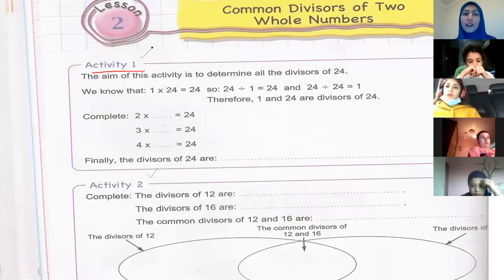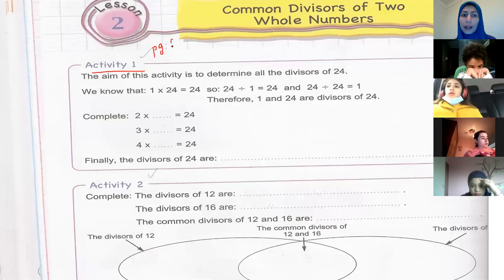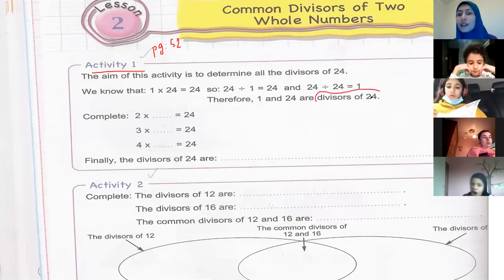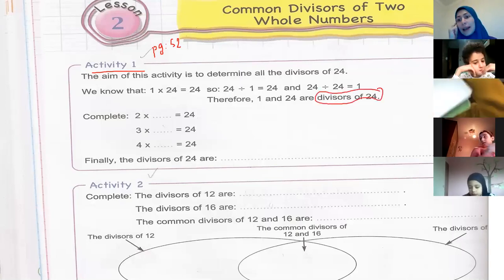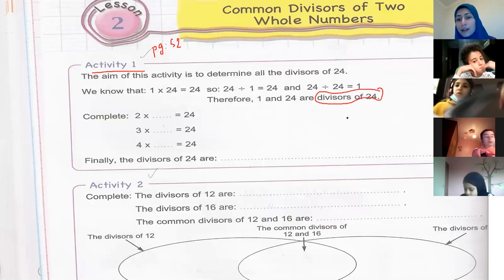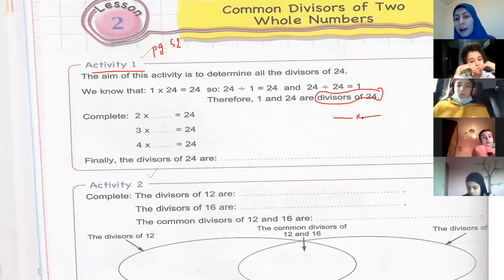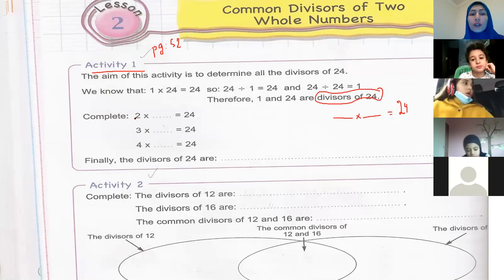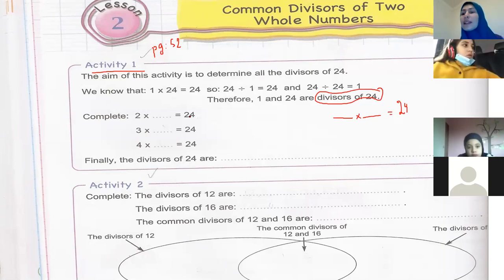Let's start with Activity 1, page 52. Open your book to page 52. We have to write the divisors of 24. To find the divisors of 24, I ask myself: which two numbers do I multiply together to get 24? For example, two times which number equals 24?